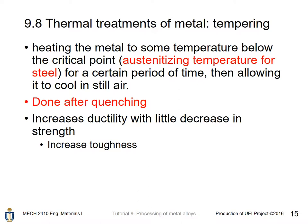Tempering means that a metal is heated to some temperature below the critical point — usually below the austenitizing temperature for steel — for a certain period of time, then allowed to cool in still air. It is usually done after quenching and results in increased ductility with a slight decrease in strength, overall increasing toughness.